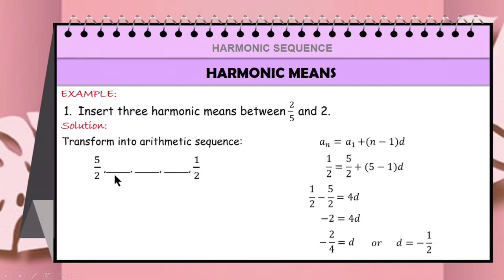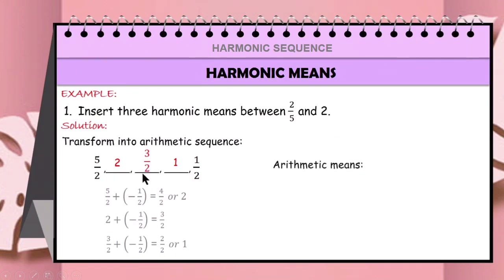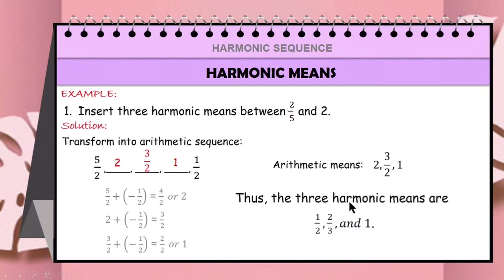We can now insert 3 arithmetic means between 5/2 and 1/2. Adding the first term 5/2 to the common difference −1/2 gives 2. Then 2 plus −1/2 is 3/2. And 3/2 plus −1/2 is 1. So the 3 arithmetic means are 2, 3/2, and 1. Thus, the 3 harmonic means are 1/2, 2/3, and 1 — the reciprocals of those numbers.